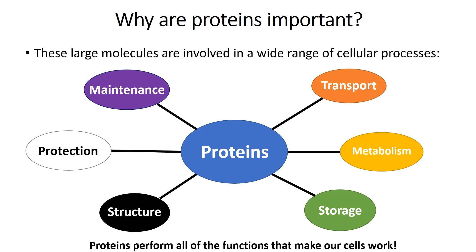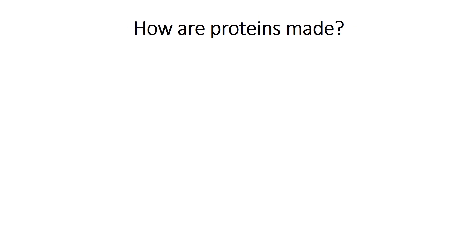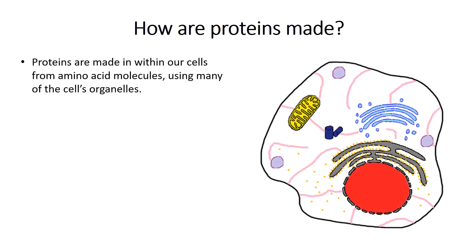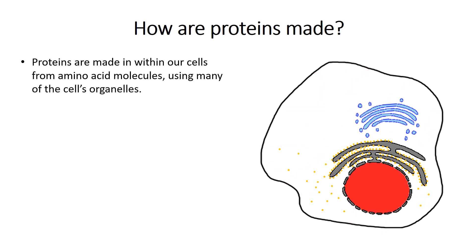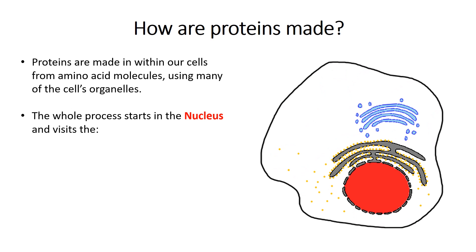So where do all of these important proteins come from? Well, they are made in our cells, from molecules called amino acids, using our DNA as a blueprint, and using many of the cell's organelles, which can be seen here. As mentioned, our DNA is used to give the instructions for how proteins are made, so the whole process starts in the nucleus, shown here in red.